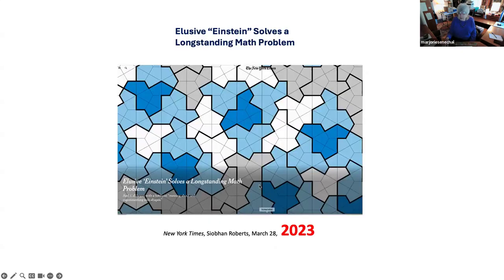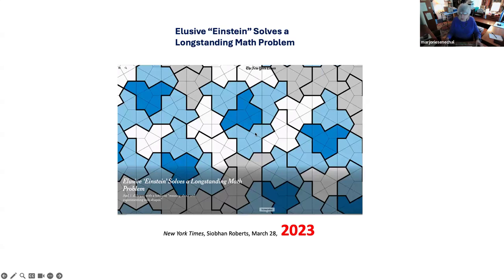The hat, on the other hand, hit the New York Times in a big way about a year ago. It's quite amazing that the Times doesn't usually give this much space to mathematics. Here you have it with the hexagons — these are all the same except some are mirror images of each other. These are all hats — the white, blue, and the two shades of blue. The whole plane is covered with it, but this is non-periodic. What Smith and the others were able to prove is that this shape cannot tile periodically. There are some shapes that can tile both periodically and non-periodically, but not this one — that's only non-periodically. So it was quite a sensation.